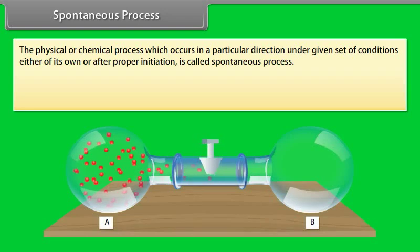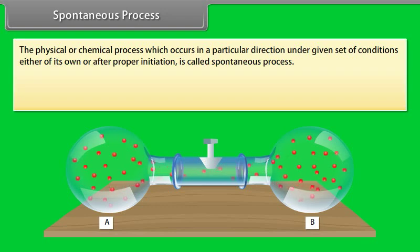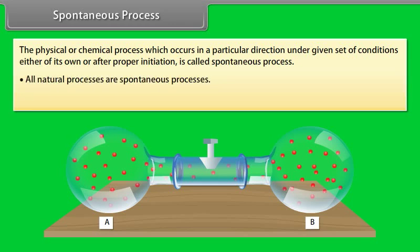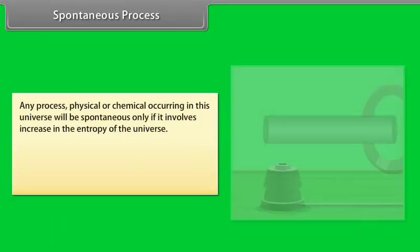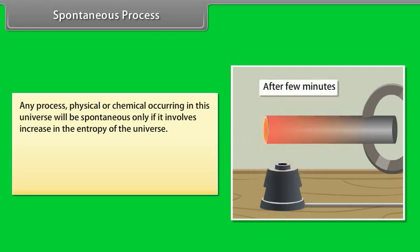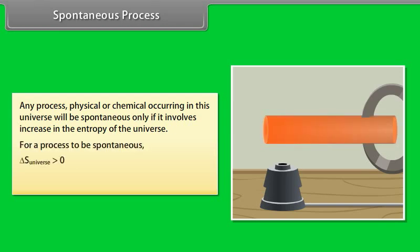Spontaneous process: A physical or chemical process which occurs in a particular direction under given conditions, either on its own or after proper initiation, is called a spontaneous process. All natural processes are spontaneous. Spontaneous processes cannot reverse on their own under the same conditions. Any process will be spontaneous only if it involves an increase in the entropy of the universe. For a process to be spontaneous, delta S universe must be greater than zero. If delta S total equals zero, it implies an equilibrium state.